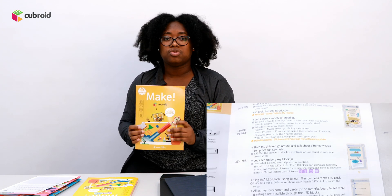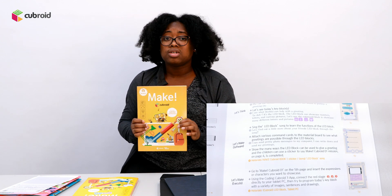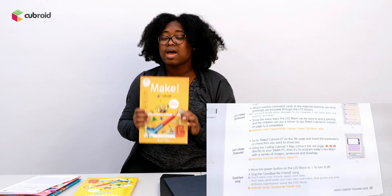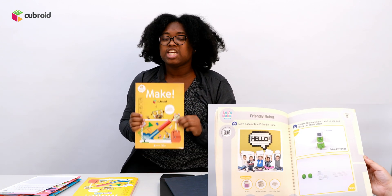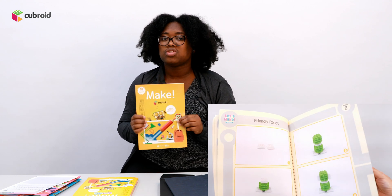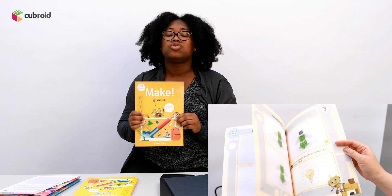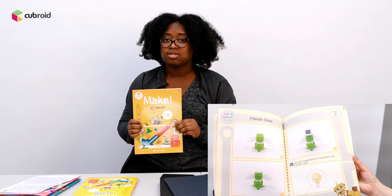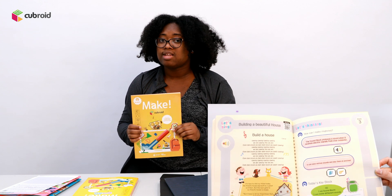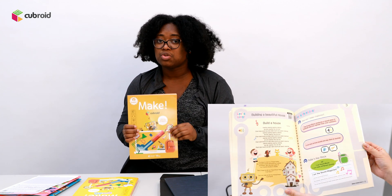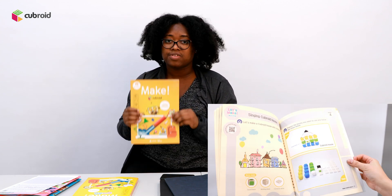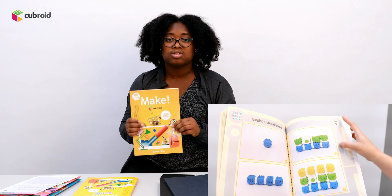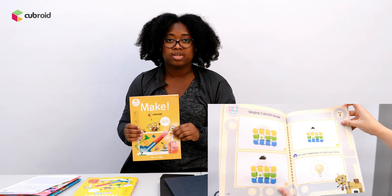Each book has two different chapters and each chapter is meant to be covered in two weeks. So when you multiply that by the 12 books we have, that is 48 weeks of educational content to learn coding.